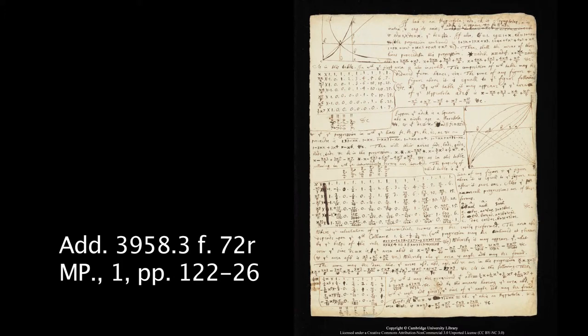What Newton does here is that he identifies a pattern of coefficients that give the area of easy curves. In the first case, he extrapolates this pattern to negative exponents, as he's interested in studying the curve whose equation is y = (1 + x)^(-1). In the second case, he interpolates this pattern to fractional exponents, as he's interested in calculating the area of the curve whose equation is y = (1 - x²)^(1/2) — that is, the circle.